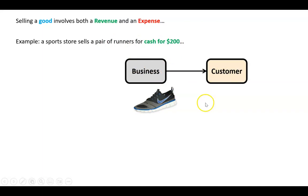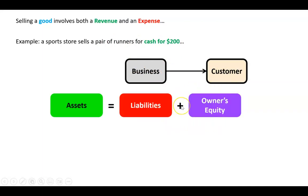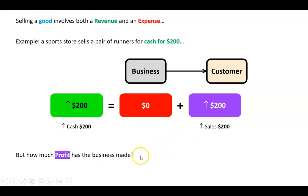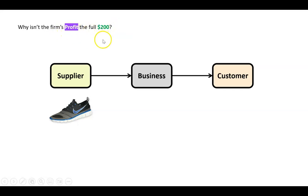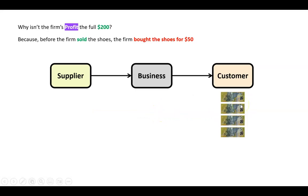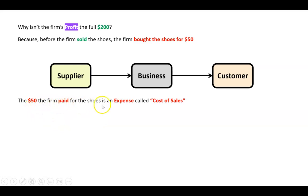The business sells a pair of Nike runners for $200 to a customer. The customer gives the business $200. In the accounting equation, cash — an asset — increases, and a sale revenue increases owners equity. But how much profit did we actually make? We got $200 for selling the shoe, but we had to give up the shoe. The business originally bought the shoes from Nike for, say, $50.